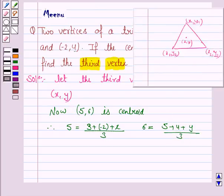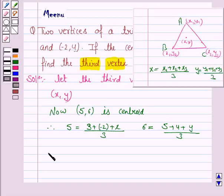As we know that if we have a triangle, say ABC, with vertices (x₁,y₁), (x₂,y₂), (x₃,y₃) and (x,y) is the centroid, then x is given by (x₁+x₂+x₃)/3 and y equals (y₁+y₂+y₃)/3. You must remember this formula. So we have 5 equals